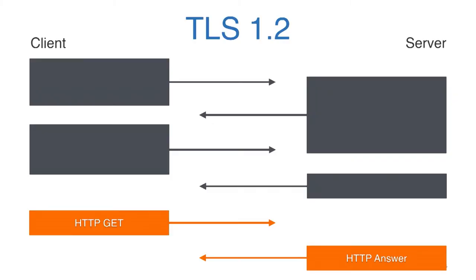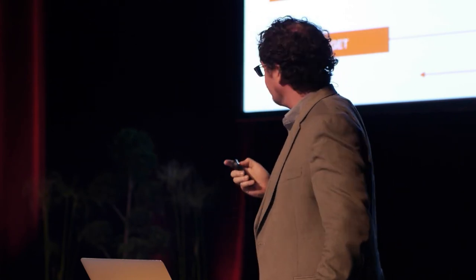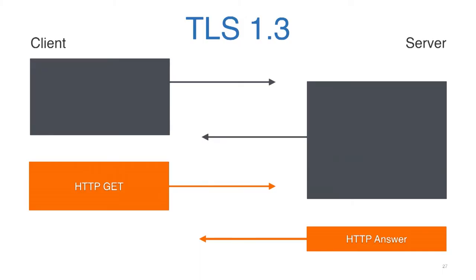With TLS 1.2, there are two exchanges of data — two round trips — that need to happen before you can send your encrypted request. Certain pieces of the protocol were flawed: in particular, the supported cipher suites were not digitally signed, which is what allowed Logjam, Freak, and other downgrade attacks. TLS 1.3 has one less round trip — 50% fewer times around the world to set things up. In cryptographic terms, this is like breaking the sound barrier.